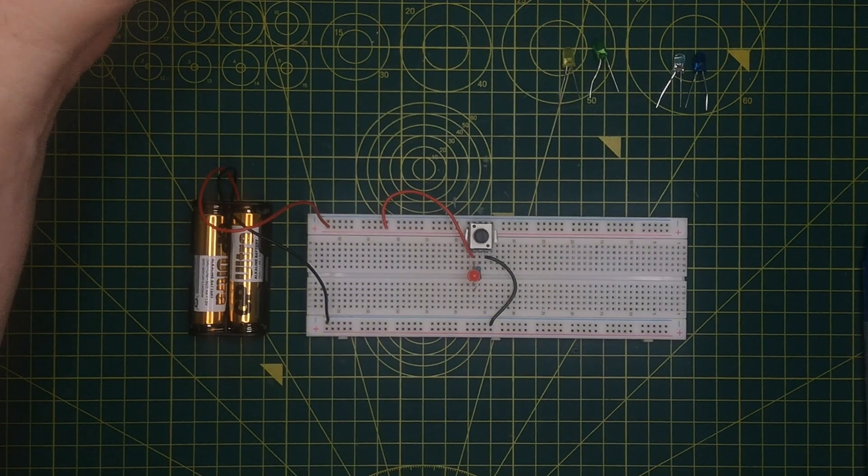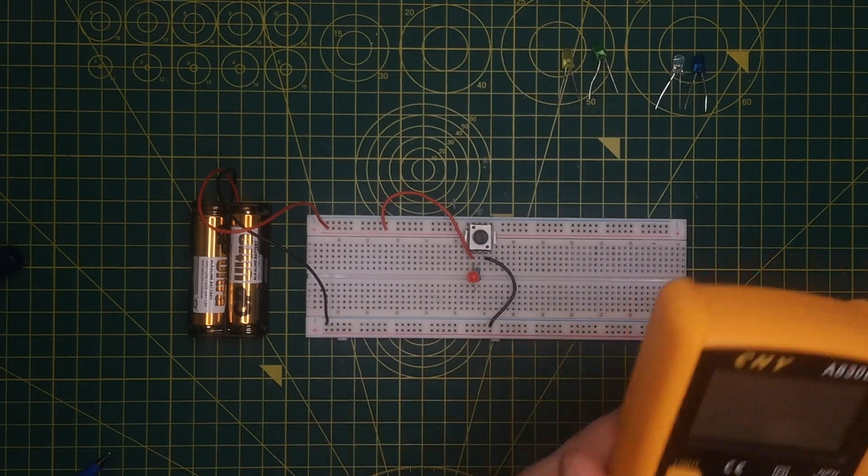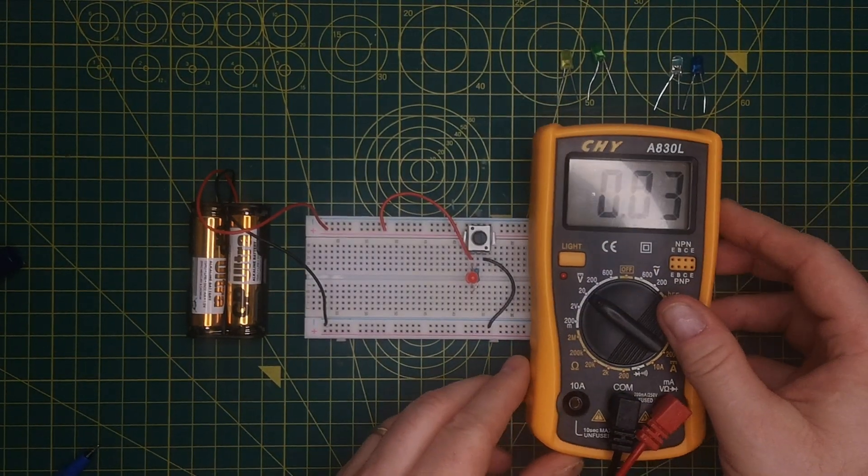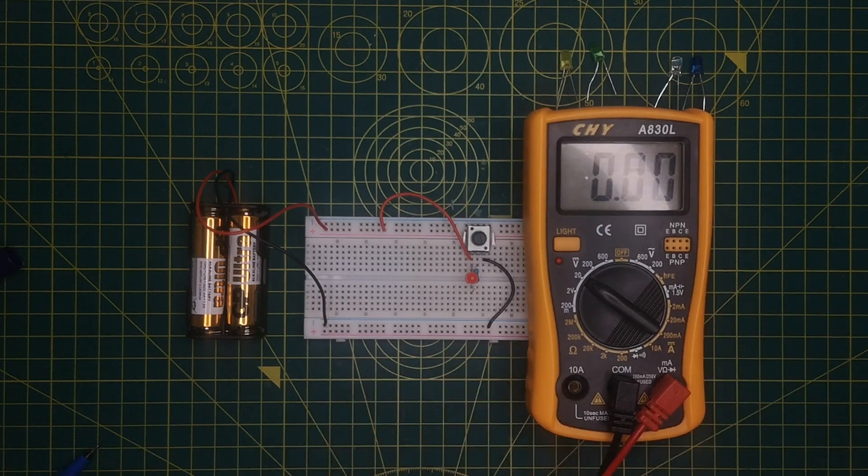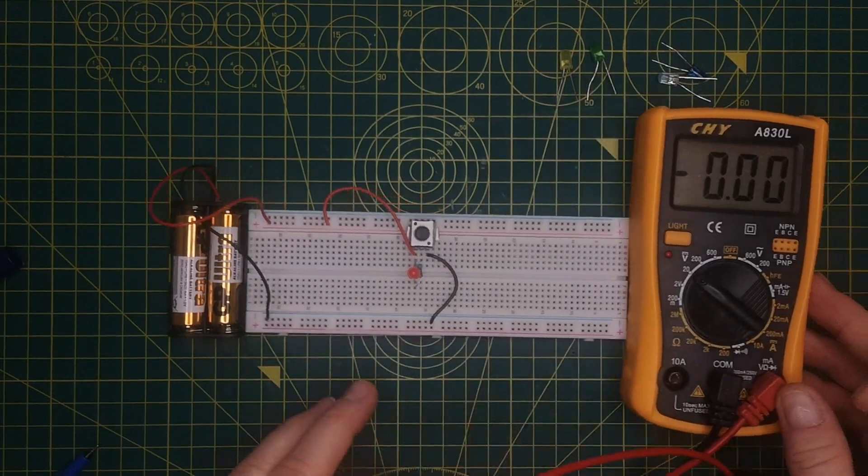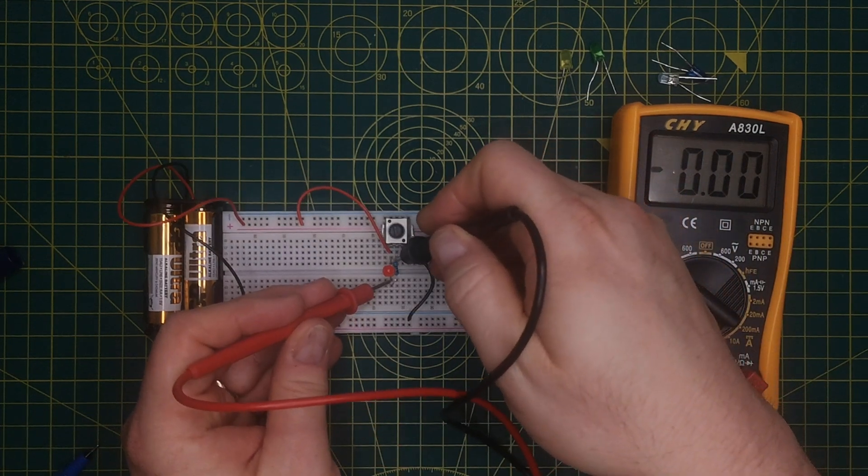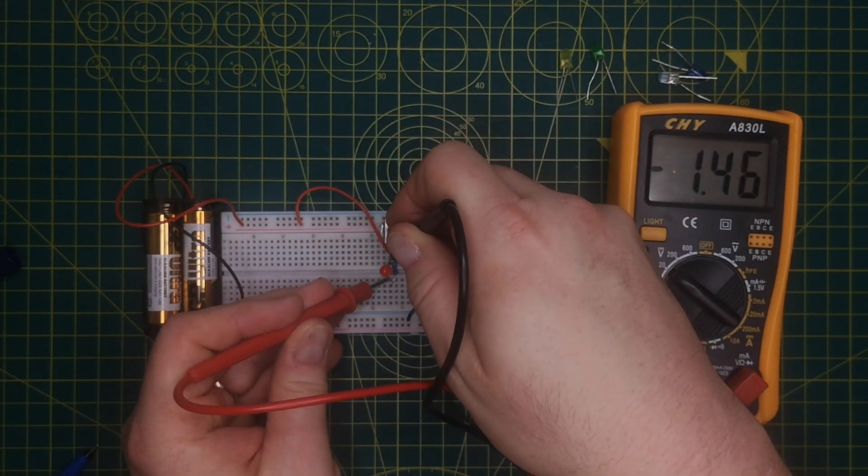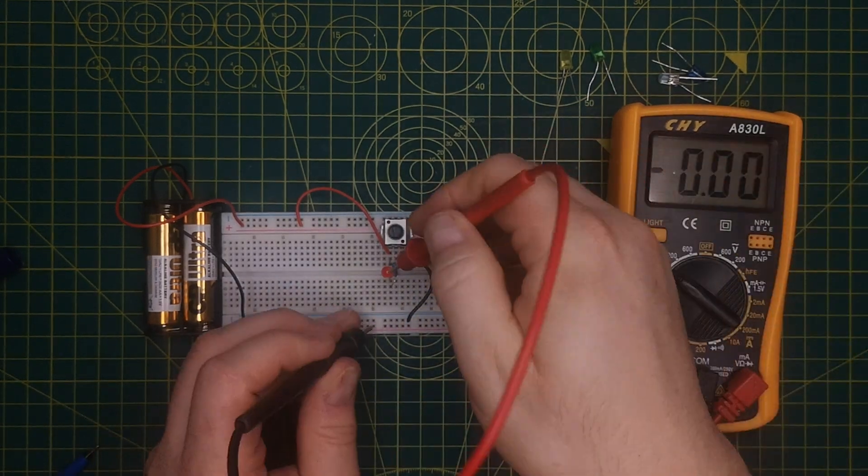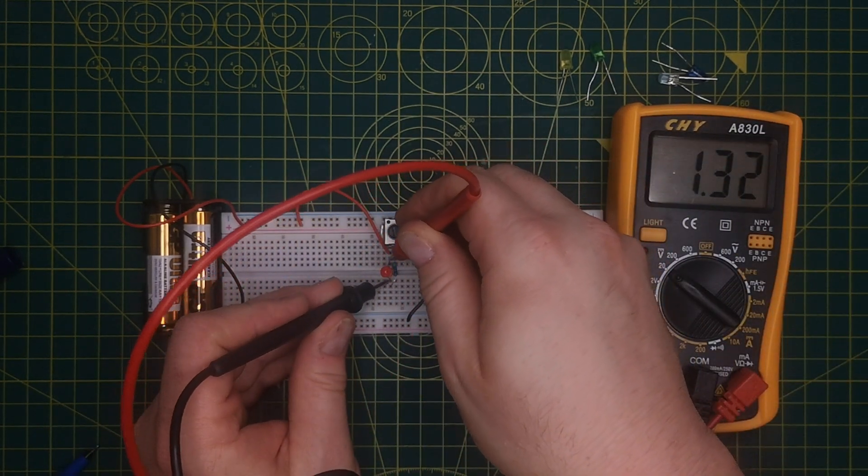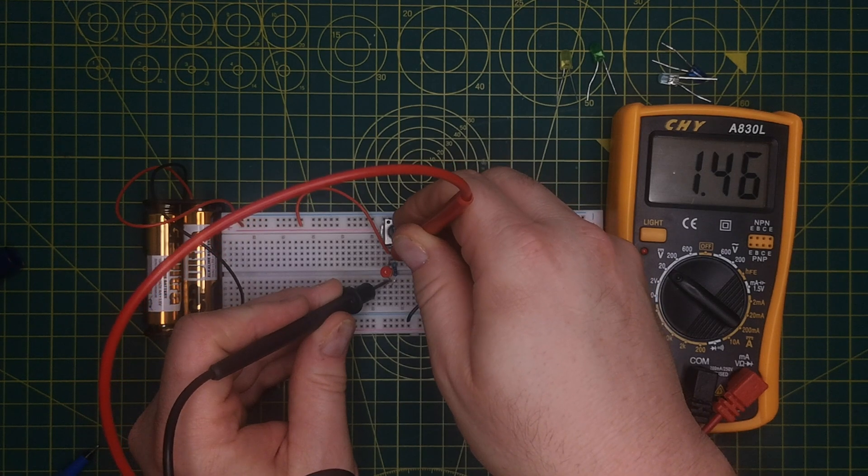But what we can do is we can alter the variable resistor until the LED just lights, just goes off, which is there. And then at that point, I can bring the multimeter in, and I can measure the voltage across the LED. So at this point here now, if I measure the voltage across the LED, it is 1.46, got the leads around the wrong way. So the LED, the forward voltage of this LED is 1.46 volts.